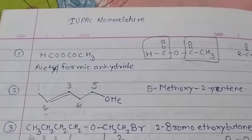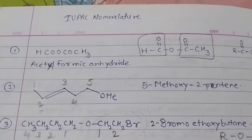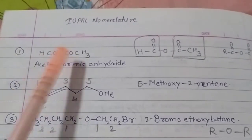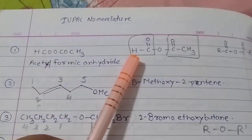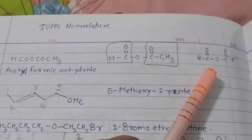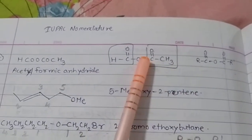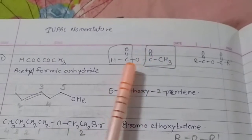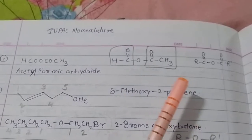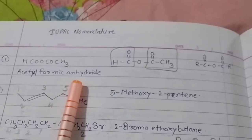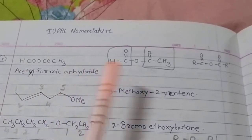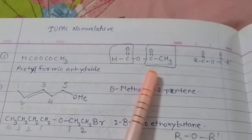Hello guys. Today we will see some examples of IUPAC nomenclature. First one is an anhydride. This part is acetyl, and this is one carbon so formyl. So the name will be acetyl formic anhydride. Anhydride is a derivative of acid, so its name is acetyl formic anhydride.